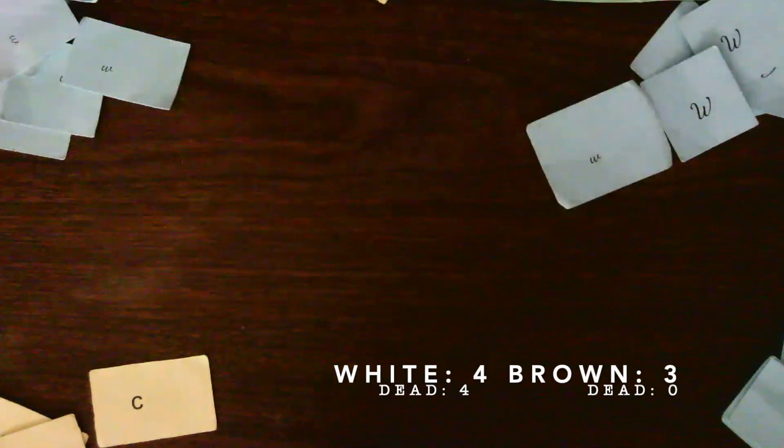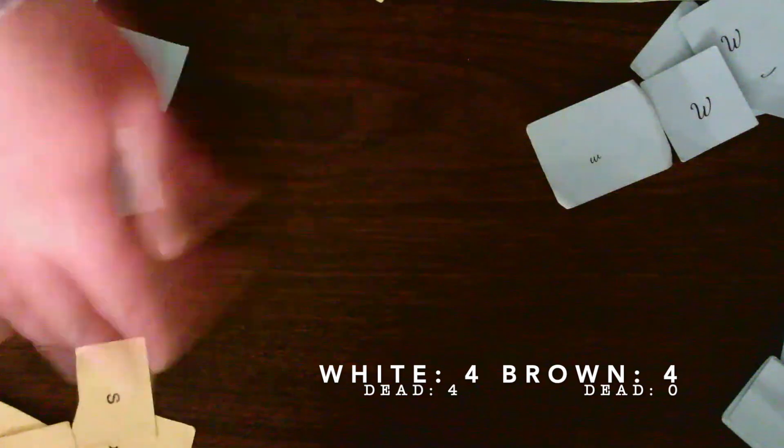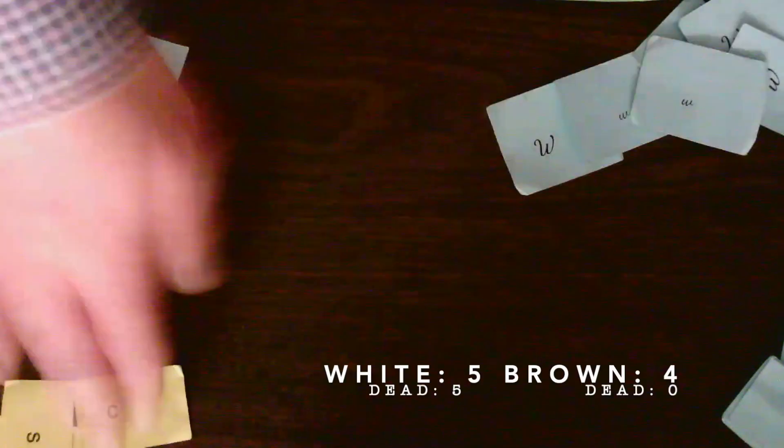So start to think, why is that happening? Why are all of our brown ones living and our white ones are dying? And what does that have to do with natural selection?